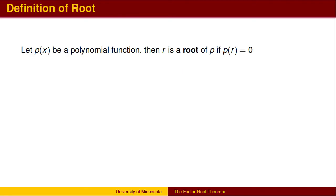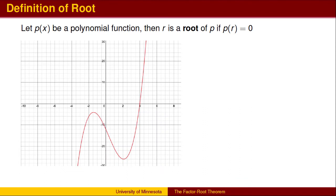We now define what it means to be a root of a polynomial. A root of a polynomial is a number that, when substituted for x, gives the answer zero. In other words, r is a root if when r is used as the input to the polynomial function, then the output is zero. In terms of the graph of the polynomial, when the output is zero, the y value is zero, which occurs at the x-intercepts. Therefore, roots are synonymous with x-intercepts.